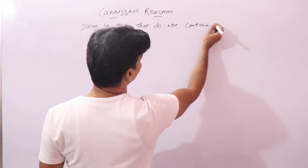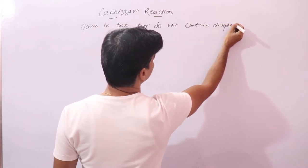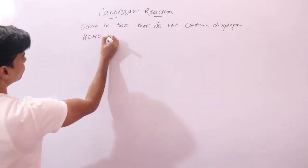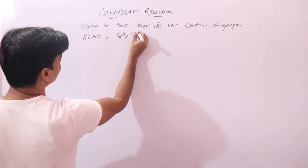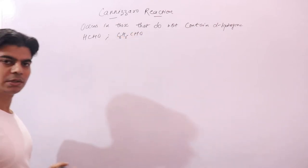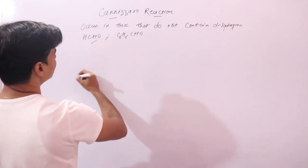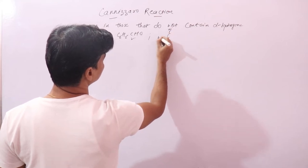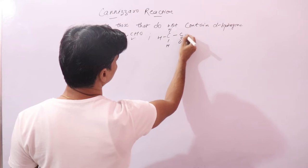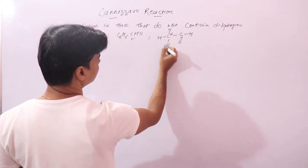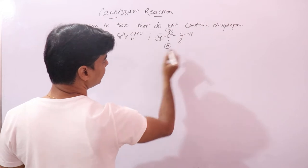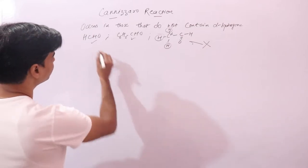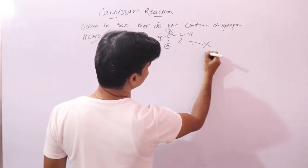The first important point: Cannizzaro reaction occurs in aldehydes that do not contain alpha hydrogens. Examples are HCHO (formaldehyde) and C6H5CHO (benzaldehyde). For a compound like acetaldehyde (CH3CHO), this carbon is the alpha carbon and these are alpha hydrogens, so it contains alpha hydrogens and will not show Cannizzaro reaction.